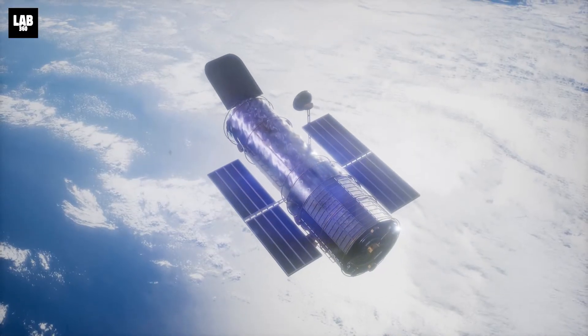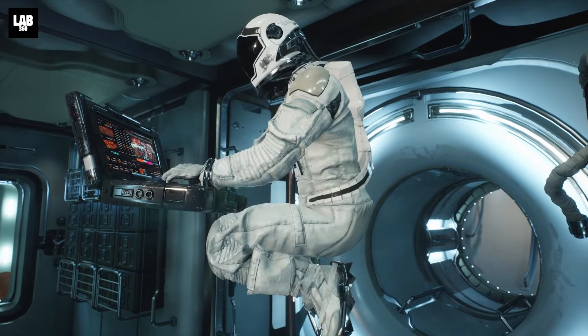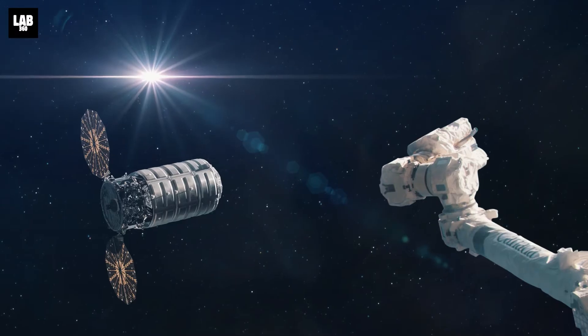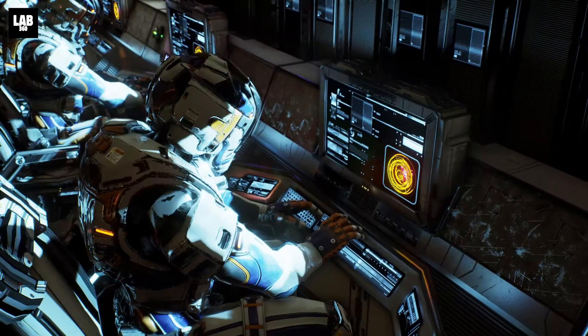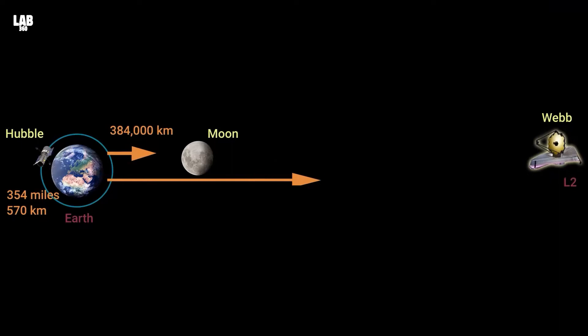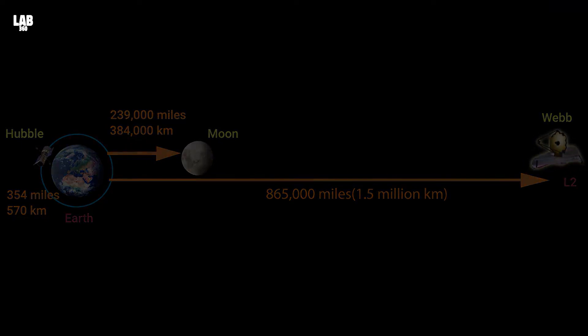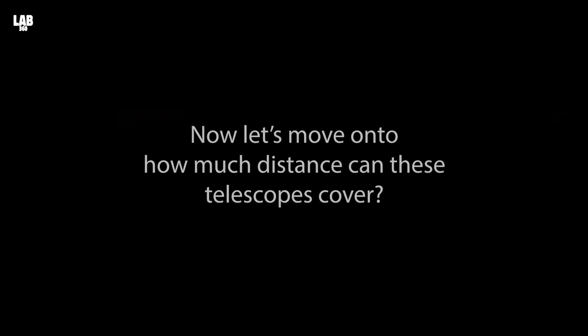The Hubble Space Telescope is the only telescope that has been serviced by astronauts. There have been five trips to the Hubble for servicing and maintenance. This is obviously not possible for the JWST, as it is so far from Earth. Now let's move on to how much distance can these telescopes cover.